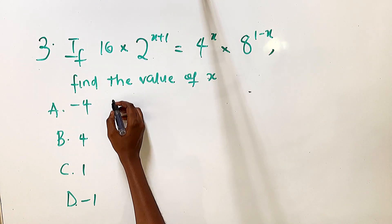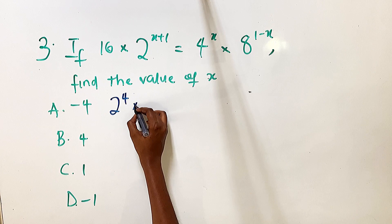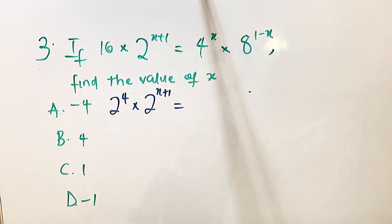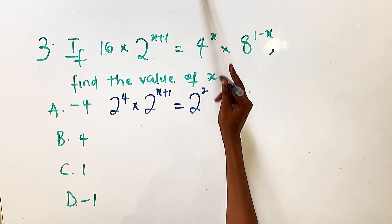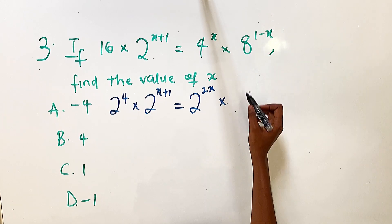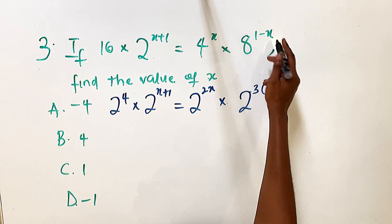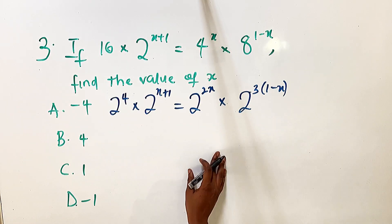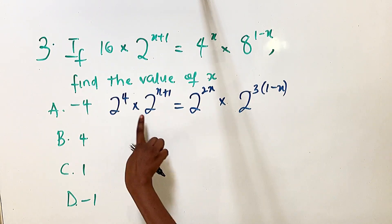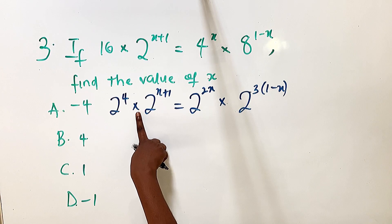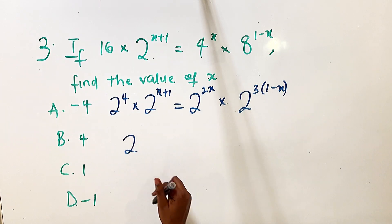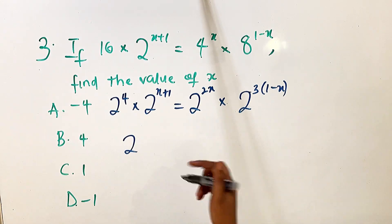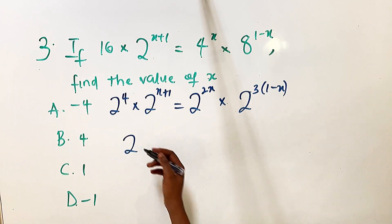16 is the same as 2 raised to the power of 4. The 2 already has base 2. 4 is the same as 2 raised to the power of 2, with power 2x. 8 is the same as 2 raised to the power of 3, multiplying the existing power 1 minus x. The law of addition for indices states: when two values share the same base and there's a multiplication sign between them, keep the base and add the powers.